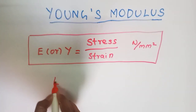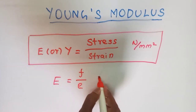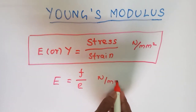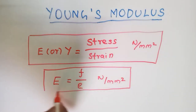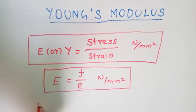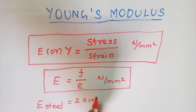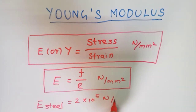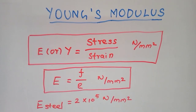E equals small f divided by e, where f indicates stress and e indicates strain, with units newton per millimeter square. Young's modulus for steel is 2 into 10 to the power 5 newton per millimeter square, which is 2 lakhs newton per millimeter square.